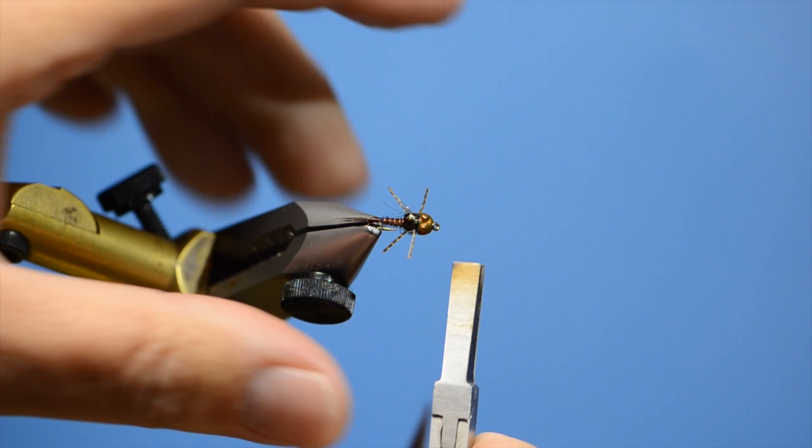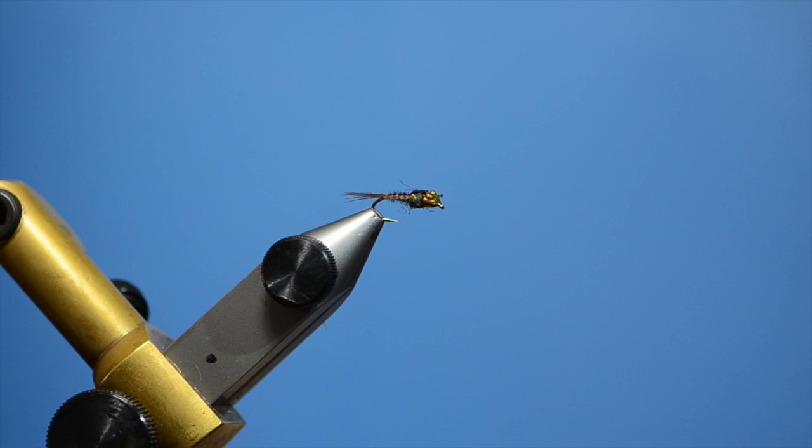First what I want to do is take a little flat pair of pliers and smash this thorax a little bit. Just to keep the symmetry between the head and the thorax. Smooth pliers.